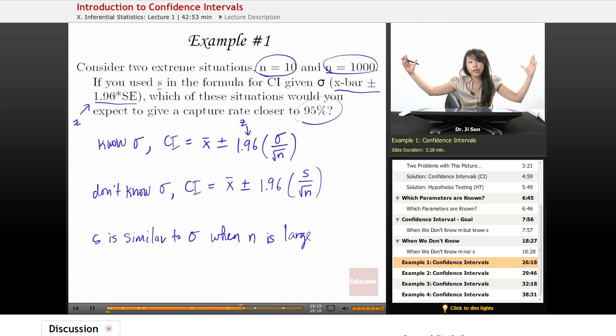In fact, you'd have to go out further to capture 95%. And so this is going to be much closer to 95% capture rate than this. This is going to give you a smaller capture rate. And that's because your S is going to be more variable, and because of that, your T distribution is going to be more dispersed. More variable means sort of wider, not as tight.